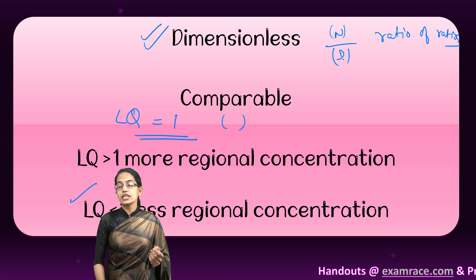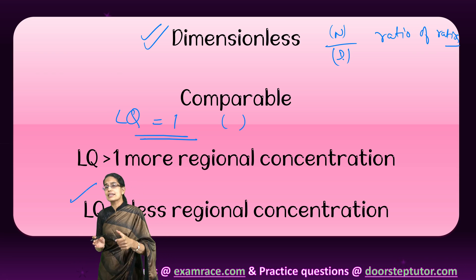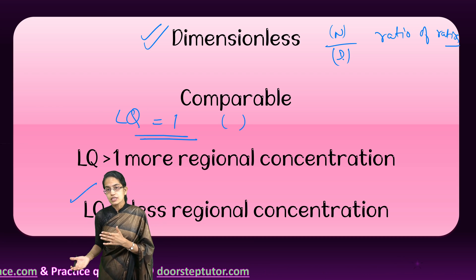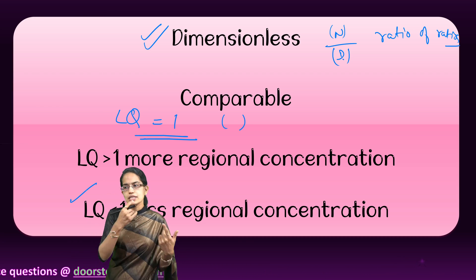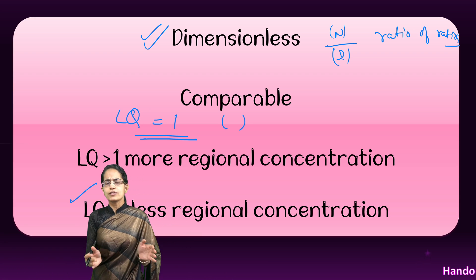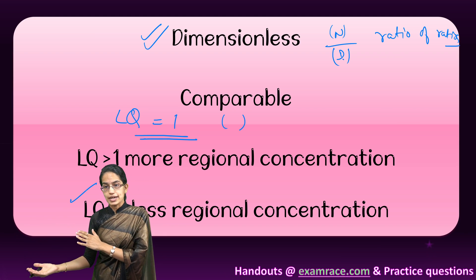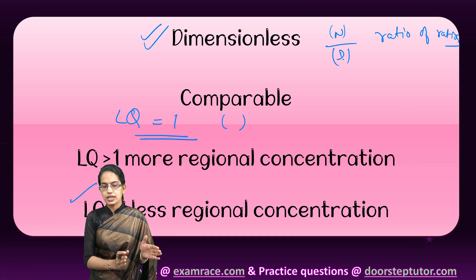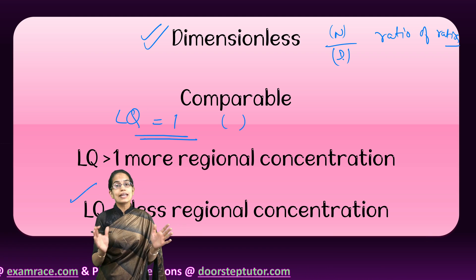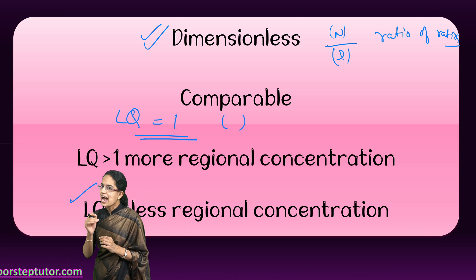If the location quotient is less than 1, there are fewer agricultural laborers present in that region. There could be many reasons — perhaps the land is not suitable for agriculture, or most agricultural laborers are occupied in allied activities, making their role in agriculture very limited. We determine the specific reasons based on the area we are studying.